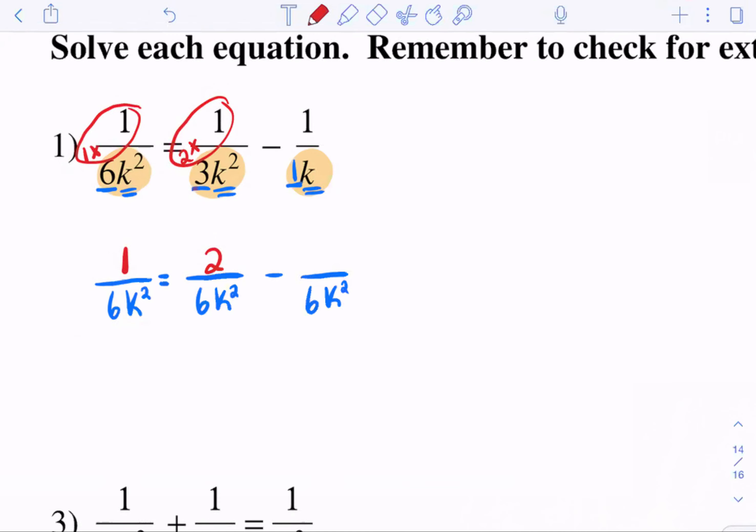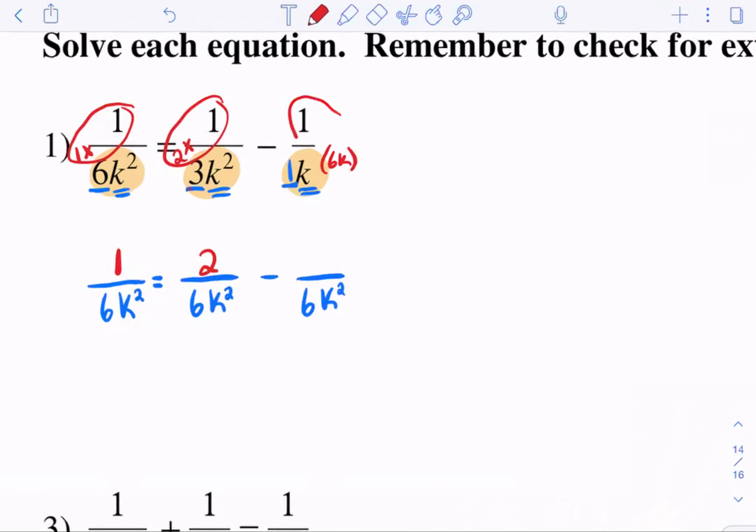And then this last one, one times what is six? Six. And then K times what is K squared? K times K. So actually, I actually have to do one K times six K to get six K squared. So that's why I have to do one times six K is six K.